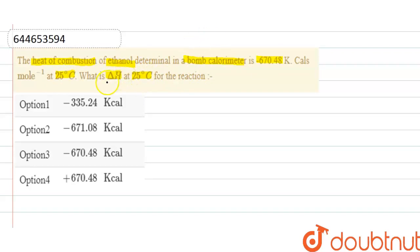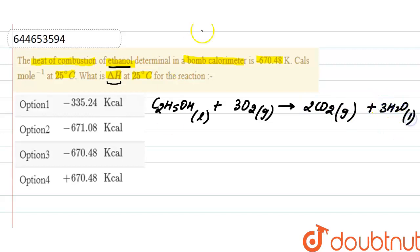In this question, we have to find out the enthalpy of the reaction. First of all, the combustion reaction of ethanol will be: C2H5OH in liquid state plus 3O2, and I am writing the balanced equation here: 2CO2 in gaseous form plus 3H2O in liquid form.